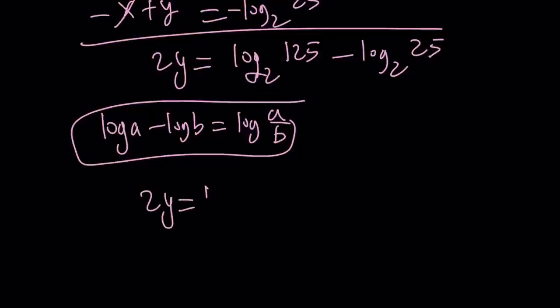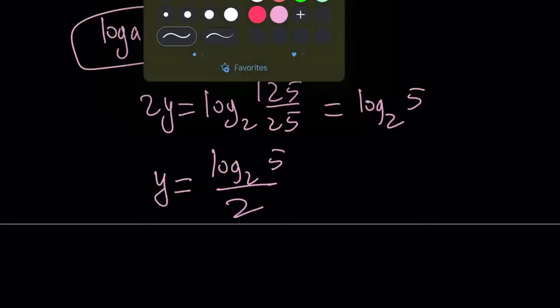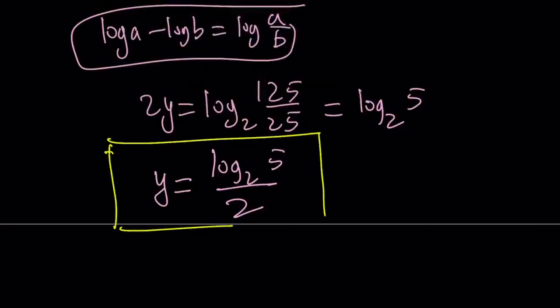So now, 2y can be written as log 125 over 25, again base 2. But 125 divided by 25 is just 5. So we get log 5 with base 2. And if you divide both sides by 2 from here, you're going to get y equals log 5 divided by 2.